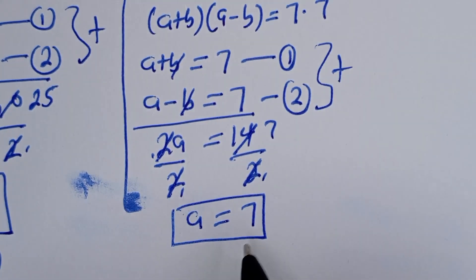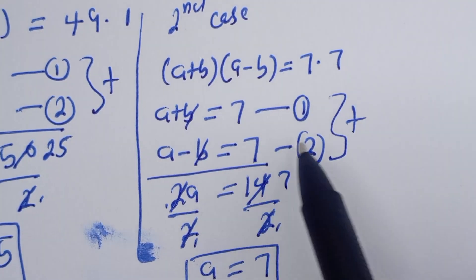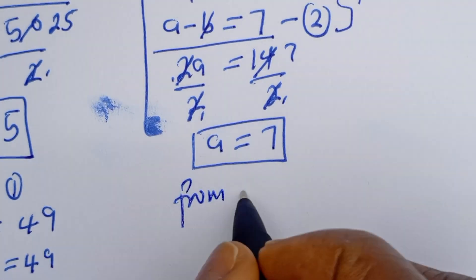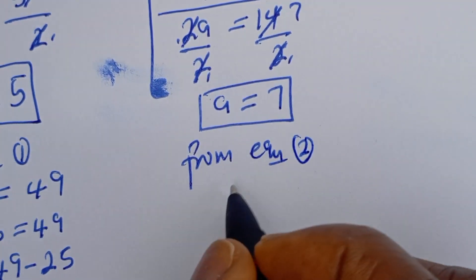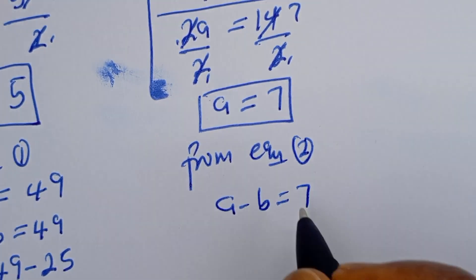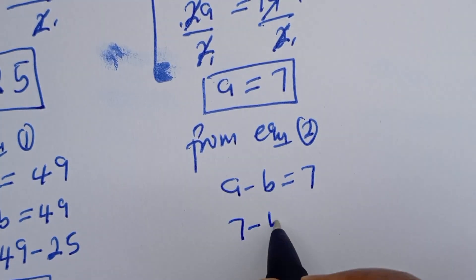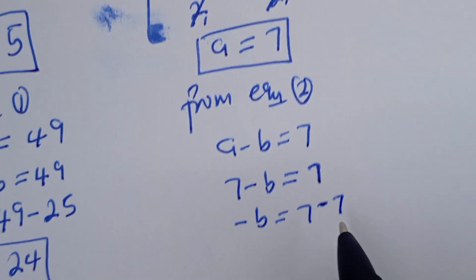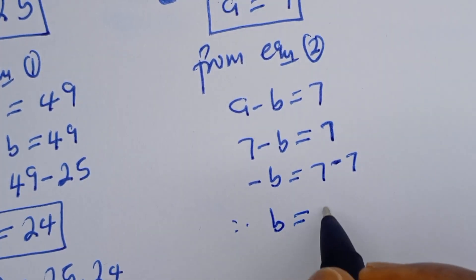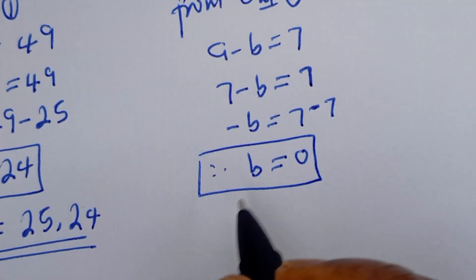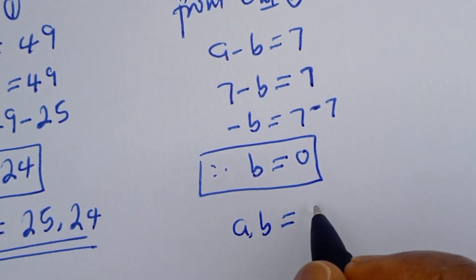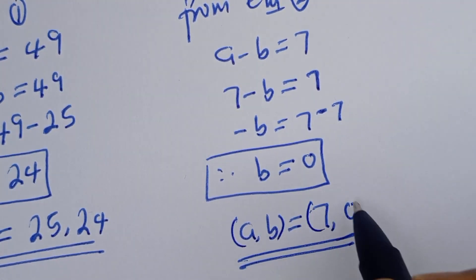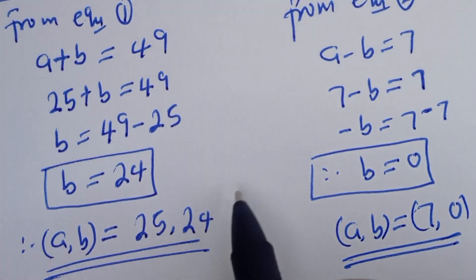We've got the value of A which is equal to 7. Let's substitute A into equation 2 to get the value of B. From equation 2, A minus B is equal to 7. When A is equal to 7, we have 7 minus B is equal to 7. Therefore, B is equal to 0. Then A comma B is equal to 7 comma 0. From the first case we have 25 comma 24.